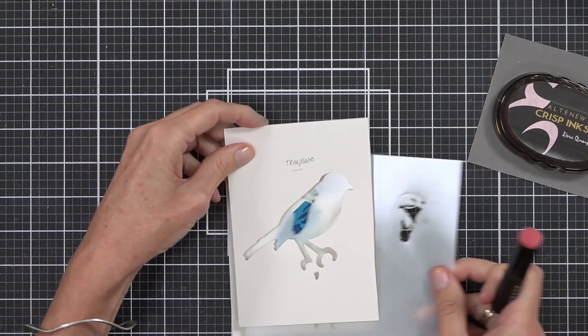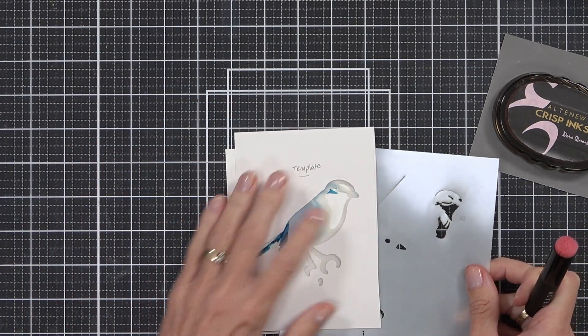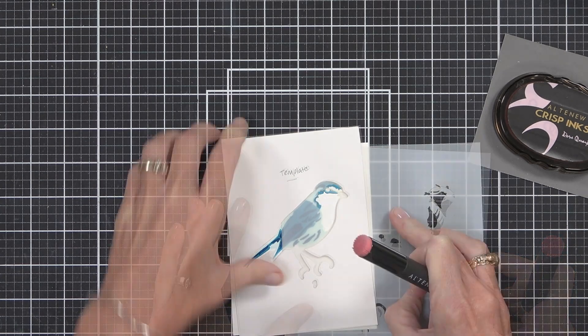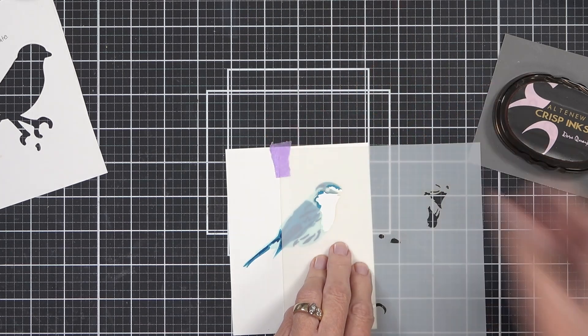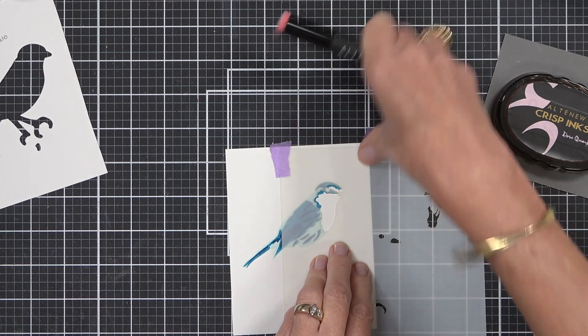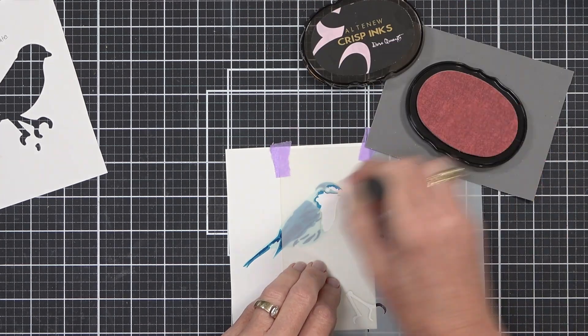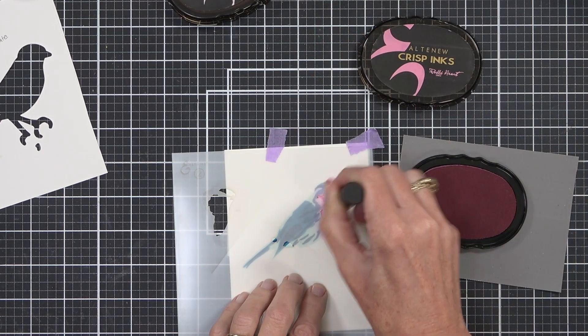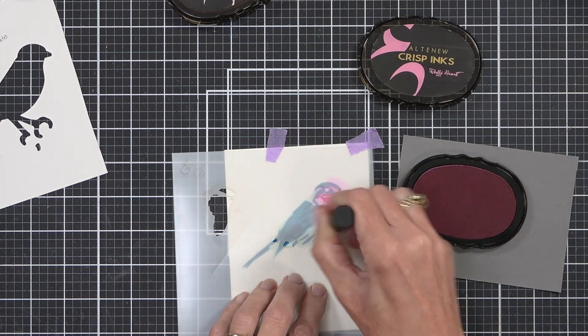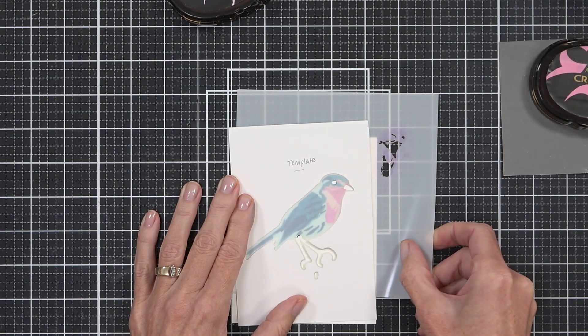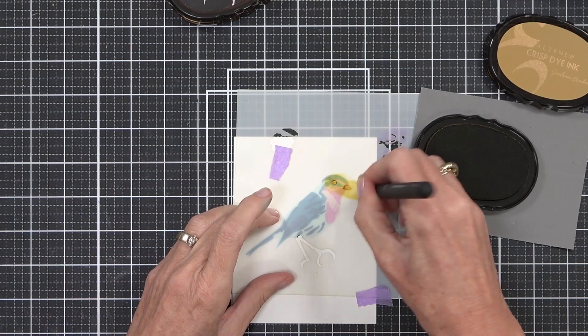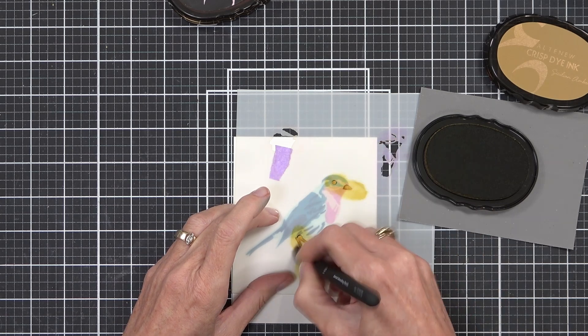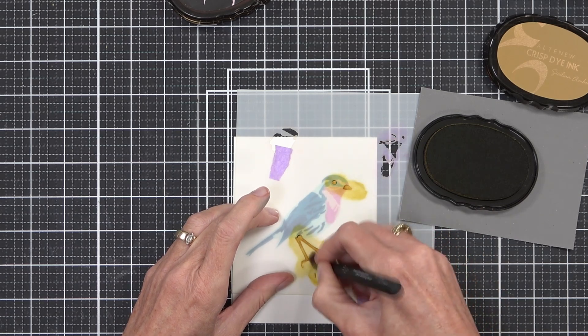All right, so this is where I use my template. I can line up where the die cut is going to happen and just make sure that I've got my stencil lining up correctly so that when I go to die cut it, it's going to die cut perfectly. I found this is particularly helpful when it came to the face of the bird and also where to place the legs. And you can see I made a mistake here.